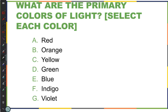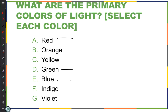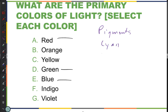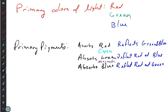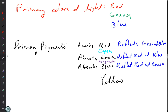Quick review: what are the primary colors of light? Red, green, and blue. And the primary pigments? Cyan, magenta, and yellow. The last pigment absorbs blue and reflects red and green, giving yellow — which just doesn't show up well on this board.